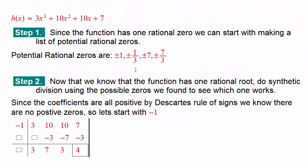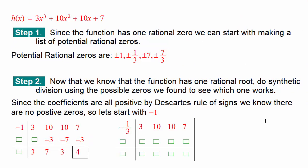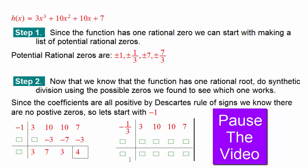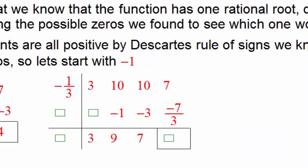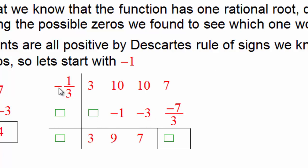So negative 1 is crossed out. Now we move on to negative 1 third. Pause the video and fill in all the blanks, then come back and check your answers. So assuming you've come back: 3 drops down. Negative 1 third times 3 is negative 1. Add those 2 to get 9. Negative 1 third times 9 is negative 3. Add them together to get 7. Negative 1 third times 7 is negative 7 thirds. 7 plus negative 7 thirds is not going to give you 0, so that doesn't work.